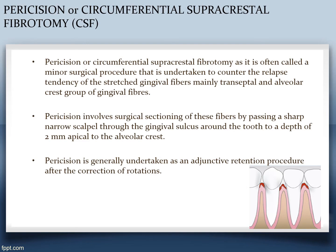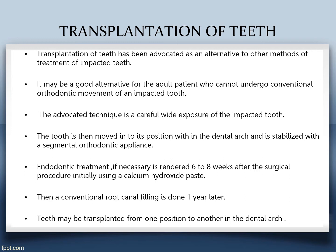Next is pericision, also called circumferential supracrestal fibrotomy or CSF — this can be a short answer or MCQ question. It is a minor surgical procedure undertaken to counter the relapse tendency of gingival fibers. By sectioning the fibers beforehand, relapse is prevented. It involves passing a sharp scalpel through the sulcus around the tooth to a depth of 2–2.5mm up to the alveolar crest. It is generally undertaken as part of the retention regime.